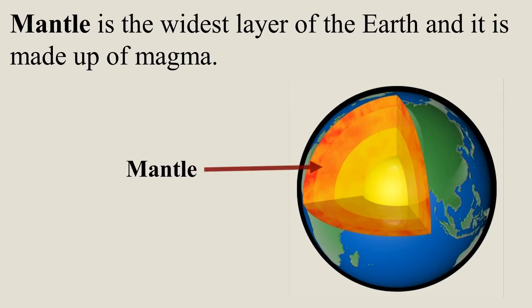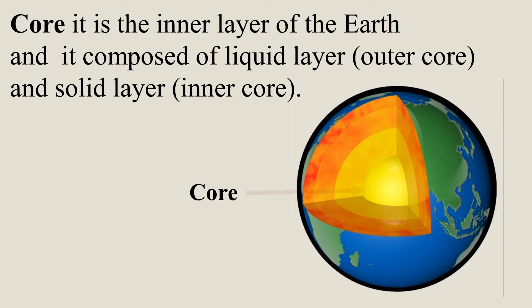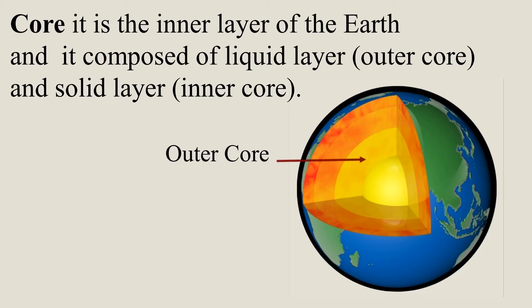Mantle — it is the widest layer of the earth and it is made up of magma. Core — it is the inner layer of the earth and it is composed of a liquid layer, the outer core, and a solid layer, the inner core.